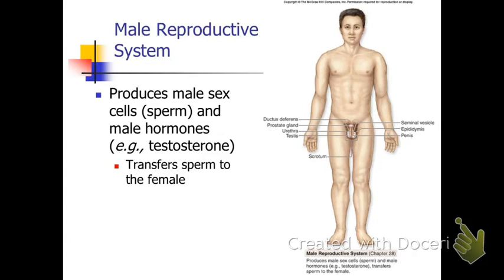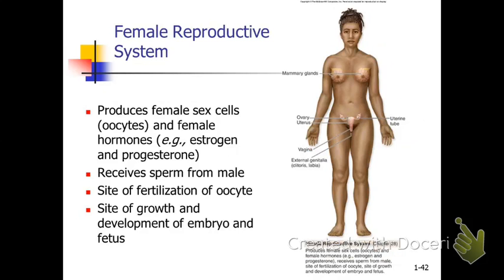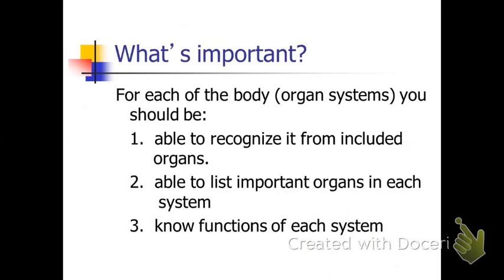We'll end with the reproductive systems, both male and female. The male reproductive system includes the testes and the production of sperm. The female reproductive system includes the ovaries, the uterus, the vagina, and the breasts. Functionally, we've got the production of eggs, the production of hormones, and the nourishing and protection of the embryo and fetus. All of these systems combine to make you and me — the organism.